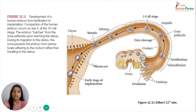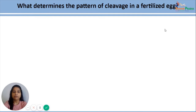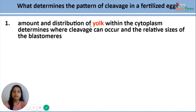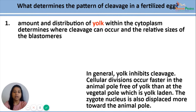Let us discuss what factors determine the pattern of cleavage in a fertilized egg. The first and foremost factor is the amount and distribution of yolk present in the egg cytoplasm, which determines where the cleavages can occur and what relative sizes the next blastomeres will have. In general, yolk inhibits cleavage. Cellular divisions occur faster in the animal pole which is relatively free of yolk as compared to the vegetal pole which is laden with yolk. Also, the zygote nucleus is displaced more toward the animal pole.